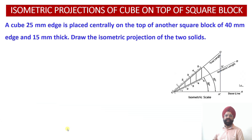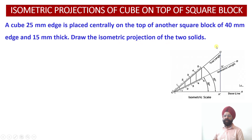Today we are going to discuss about the isometric projections of the combined solid in which a cube is resting centrally on top of a square block. So let's read out the statement: a cube of 25 mm is placed centrally on top of another square block of 40 mm height and 15 mm thickness. We are required to draw the isometric projections of the combined solid.